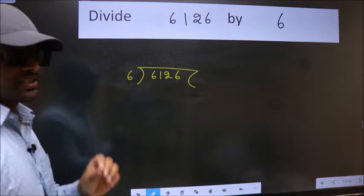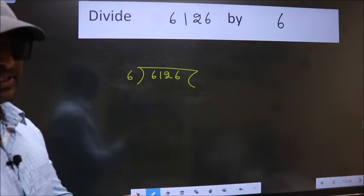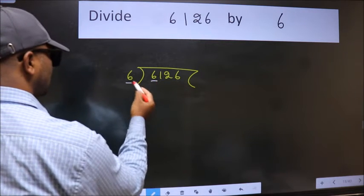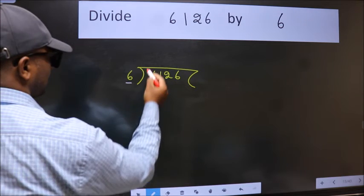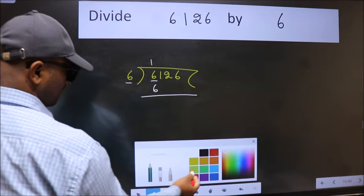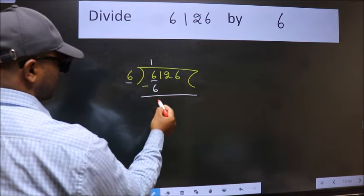This is step 1. Next, here we have 6 and here 6. When do we get 6 in the 6 table? 6 once is 6. Now we subtract and get 0.